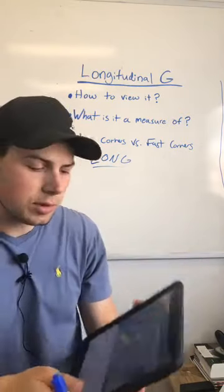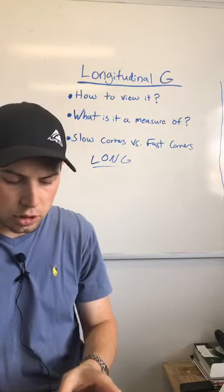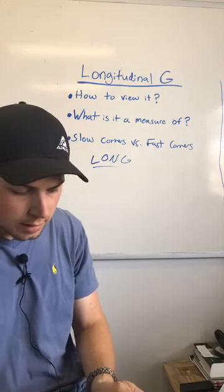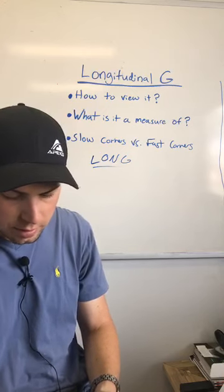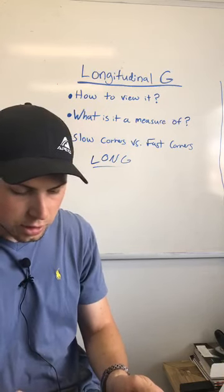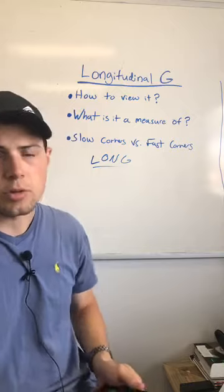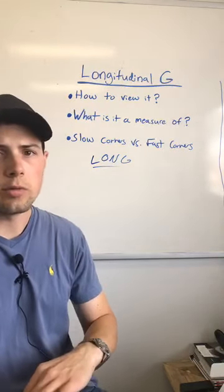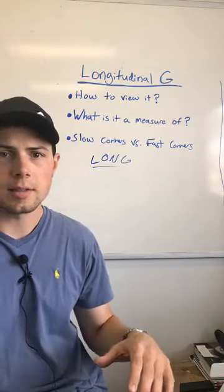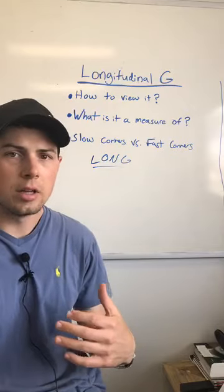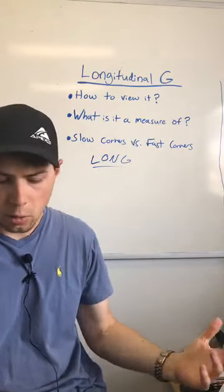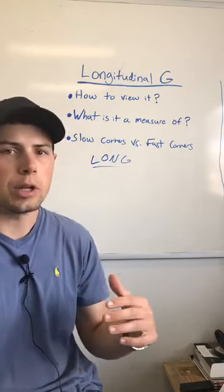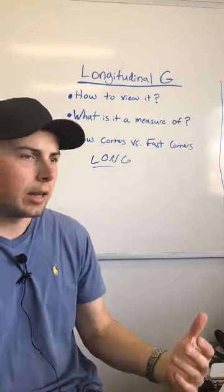You can also see it in TrackAttack — it's a channel provided in TrackAttack. So pretty simple. You'll see longitudinal G and it's a pretty common measure. This is after reviewing the replay of your apex lights and finding the corners where you have red lights under braking or cornering. Longitudinal G is usually the next thing that we go to — the next thing that we analyze.